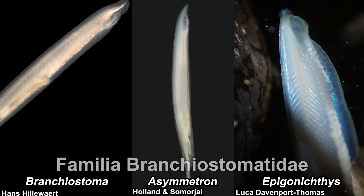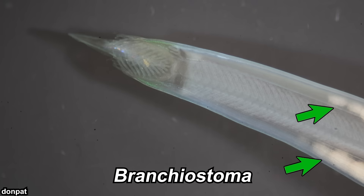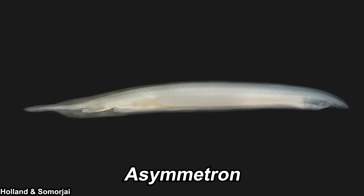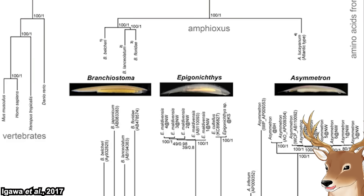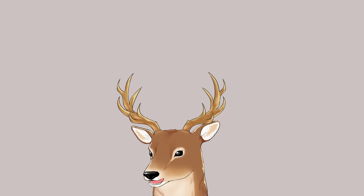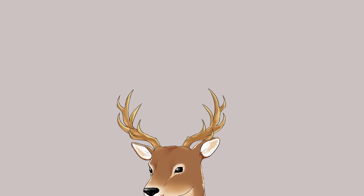Some classify each of these to their own family, but the generally accepted classification now is to put them all in one family: Branchiostomatidae. Currently, each of the three genera has relatively simple diagnostic characters. Branchiostoma has gonads on both sides of its body, while the other two only have gonads on the right side. Asymmetron has a urostyloid process — an elongated tail protrusion — while Epigonichthys does not. However, molecular analysis is not exactly in line with that, because Epigonichthys groups together with Branchiostoma, not Asymmetron.